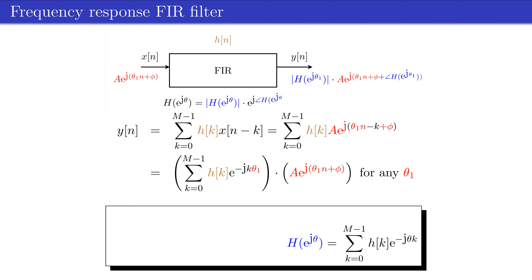From the previous example, it follows that the frequency of the output phasor is the same as the frequency theta1 of the input phasor. The FIR filter has changed the amplitude by the magnitude of the frequency response evaluated at frequency theta1, and the phase has changed by the phase of the frequency response evaluated at frequency theta1.